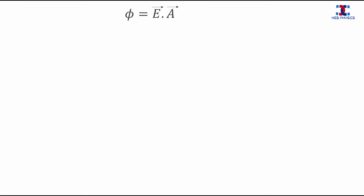The electric flux is a scalar quantity and it is denoted by the letter phi. Phi is equal to the scalar product of electric field and area vector. So this can be written as phi equals E A cos theta.